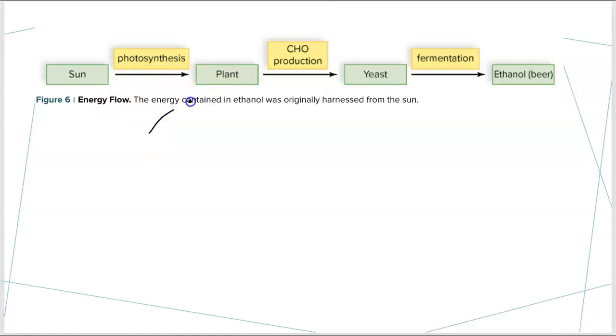The sun triggers photosynthesis in the plant, but the plant also needs water and carbon dioxide. That plant is barley in this scenario for making beer. The barley runs photosynthesis.